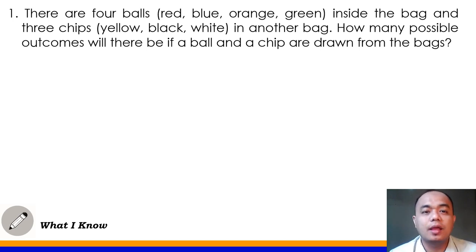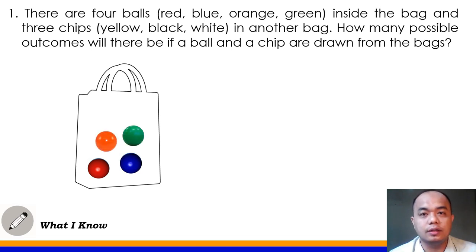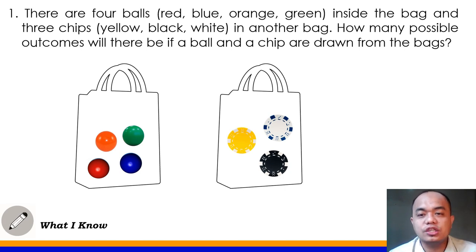Let's have number one. There are four balls — red, blue, orange, green — inside the bag. And three chips in another bag: yellow, black, and white chips. The question is: how many possible outcomes will there be if a ball and a chip are drawn from the bag?